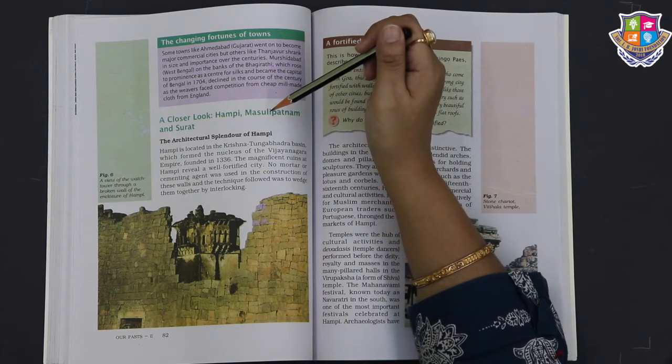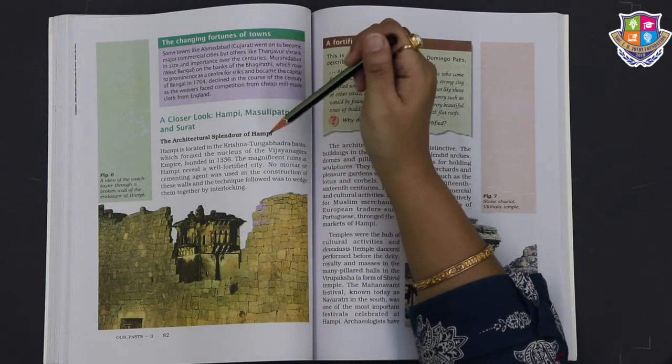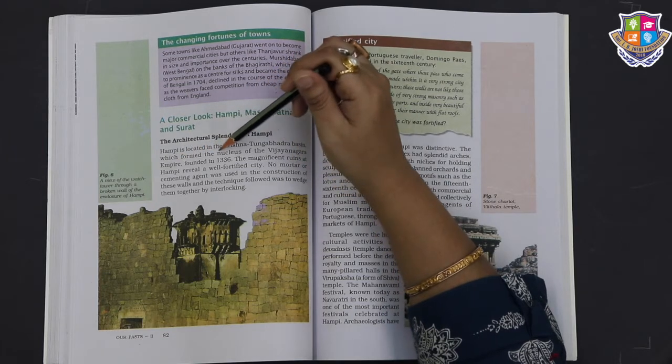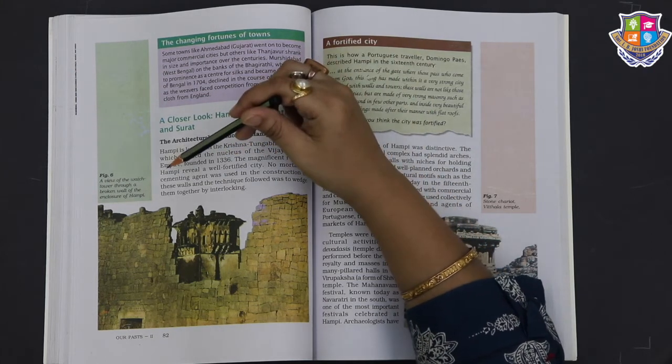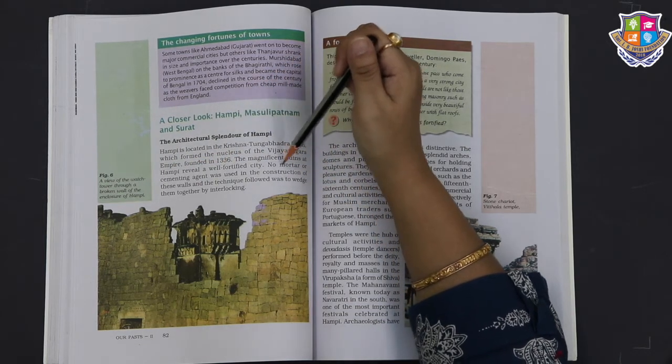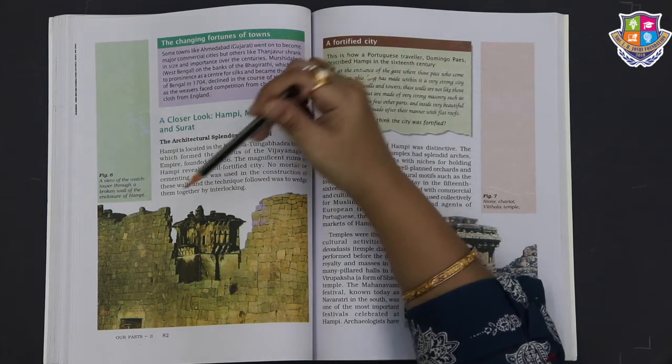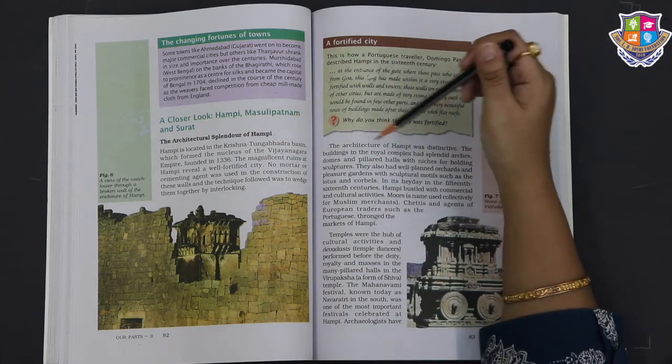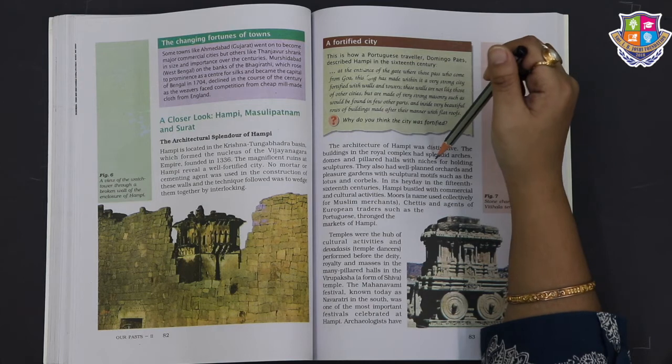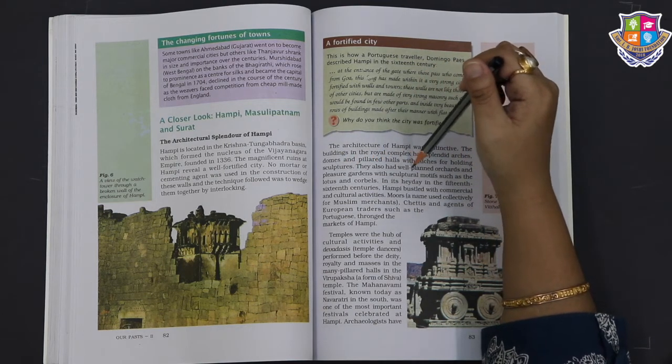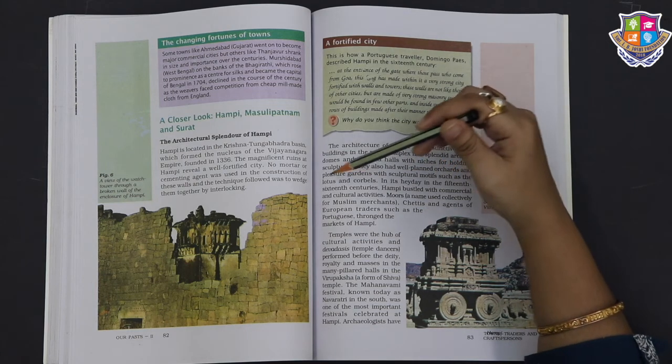A closer look: Hampi, Masulipatnam and Surat. The architectural splendor of Hampi. Hampi is located in the Krishna-Tungabhadra basin, which formed the nucleus of the Vijayanagara empire, founded in 1336. The magnificent ruins at Hampi reveal a well-fortified city. No mortar or cementing agent was used in the construction of these walls, and the technique followed was to wedge them together by interlocking. The architecture of Hampi was distinctive. The buildings in the royal complex had splendid arches, domes, and pillared halls with niches for holding sculptures. They also had well-planned orchards and pleasure gardens with sculptural motifs such as the lotus and corbels.